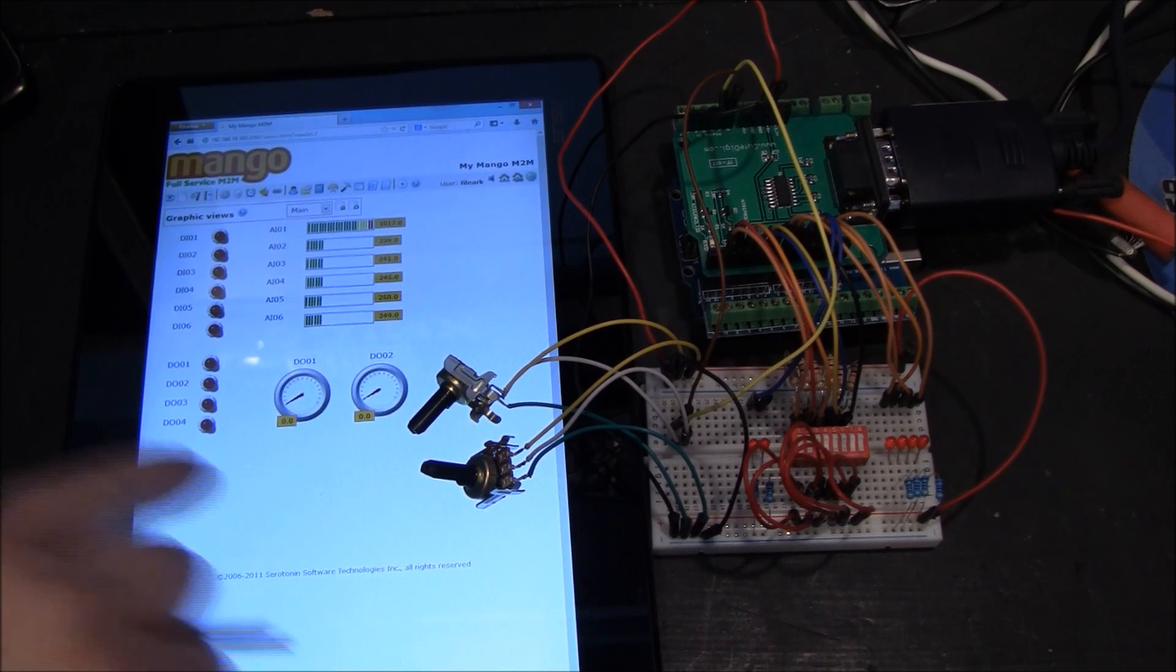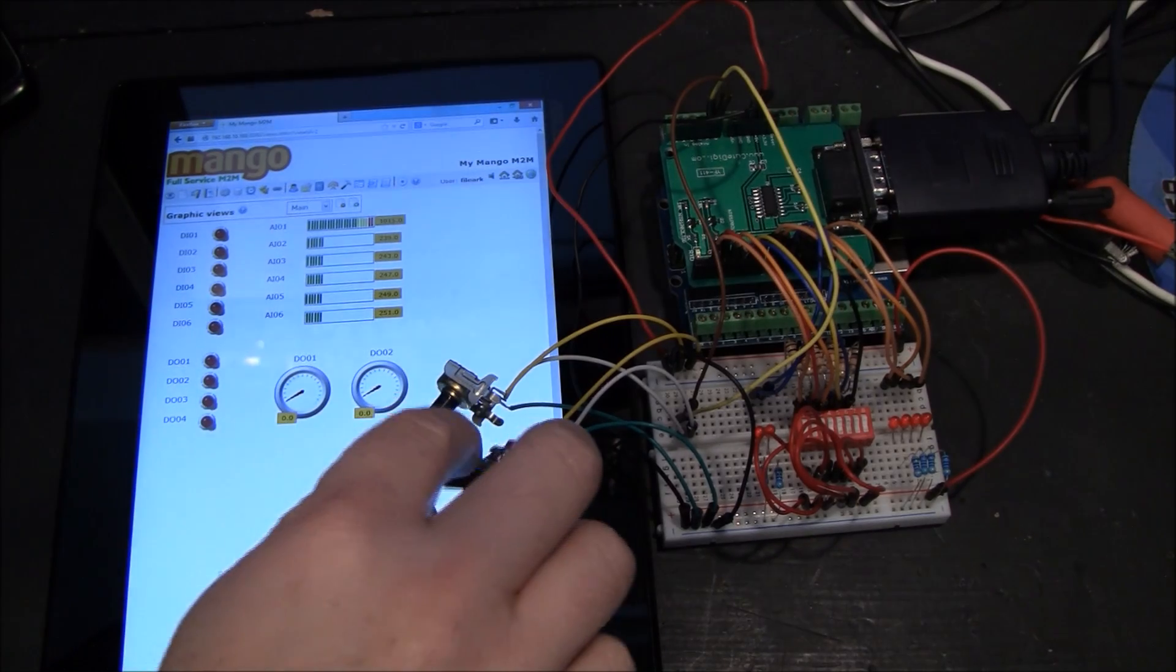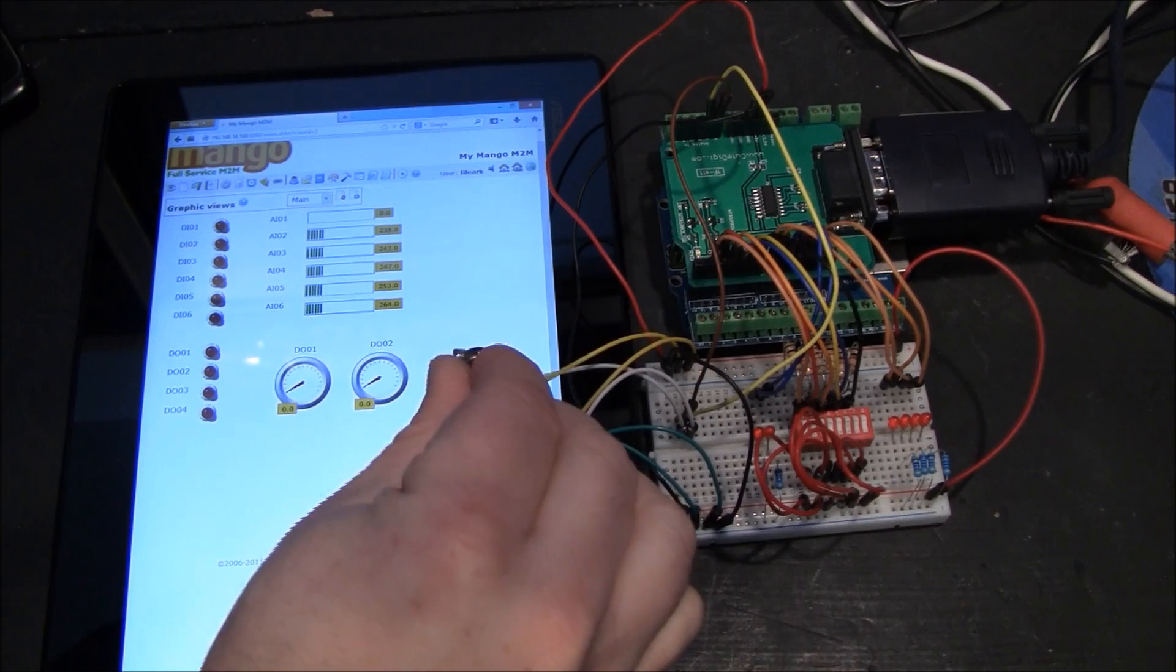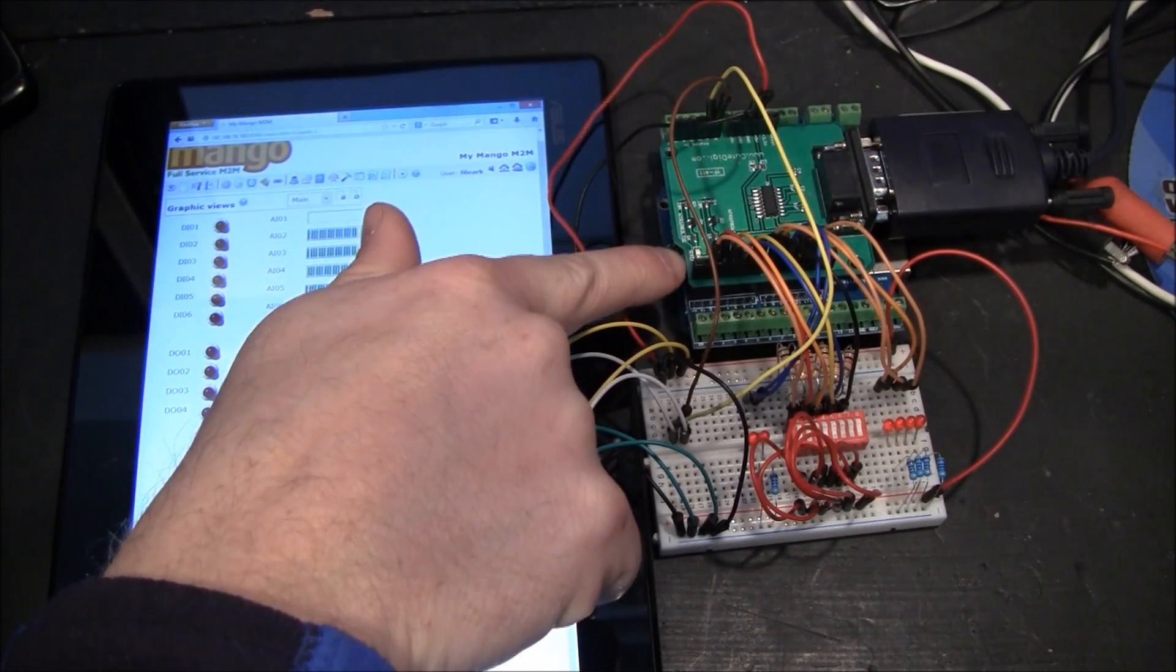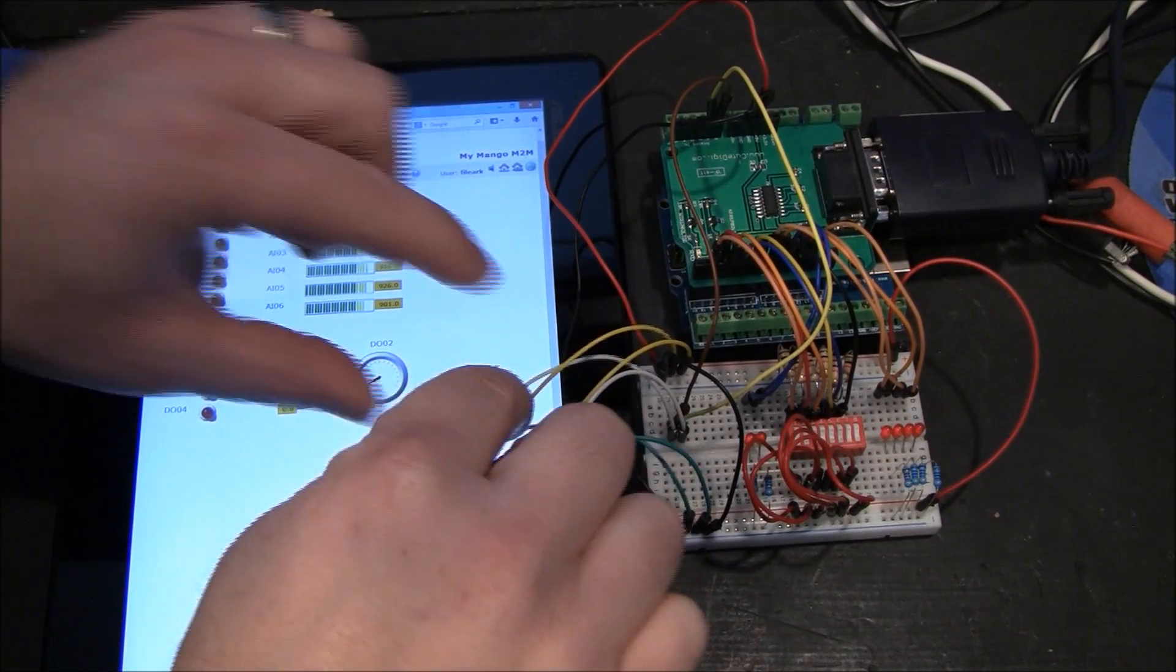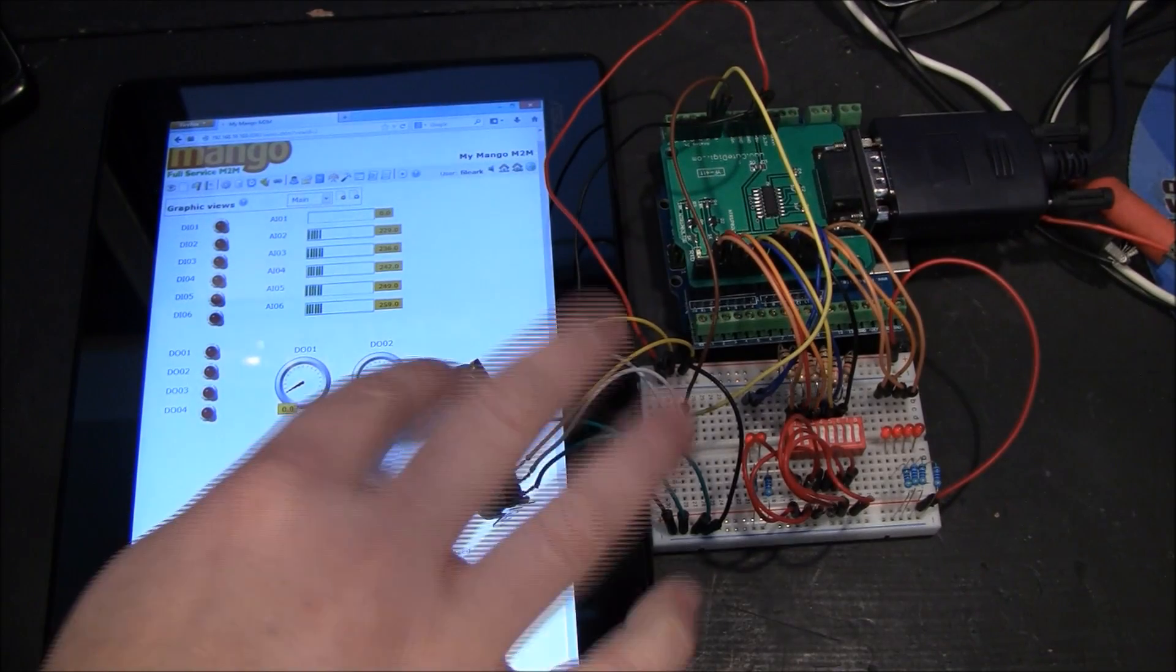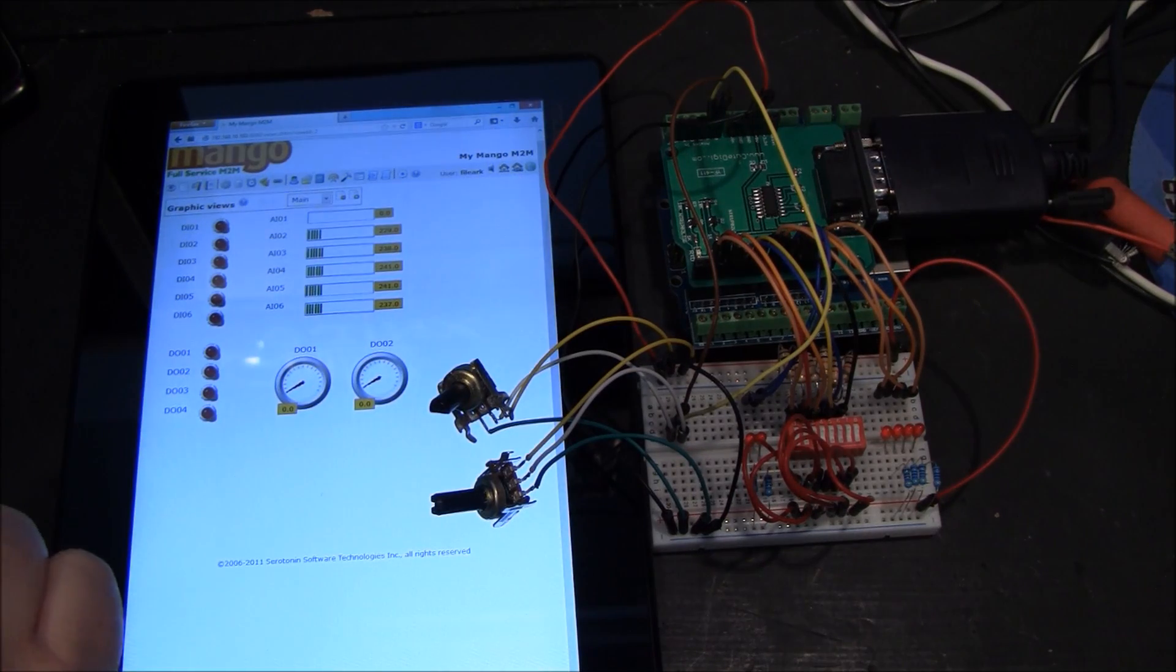Right now we're looking at a HMI, or human machine interface. We've got analog inputs. So let me turn some of these knobs. Turn that one all the way down. We'll turn this one up. So I have chosen to have Mango communicate with this device every three seconds. That's all configurable. The reason that all of these went up is because I've got something on the first two, and then the last four are kind of floating. The Arduino doesn't have real robust electronics that are pulling it down, but that's pretty easy to do with some resistors.